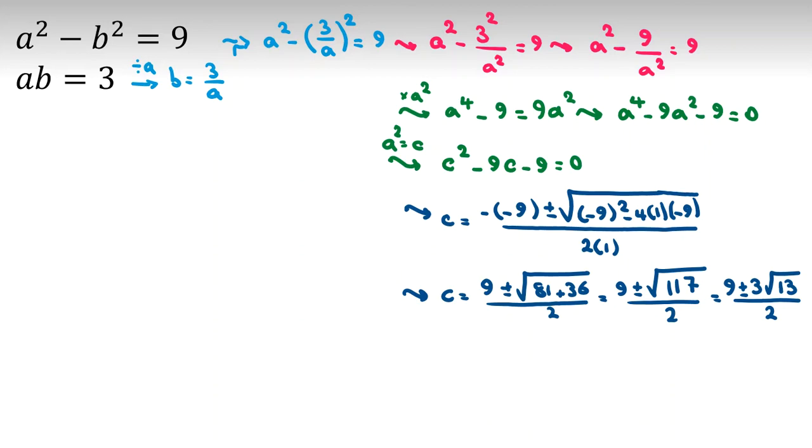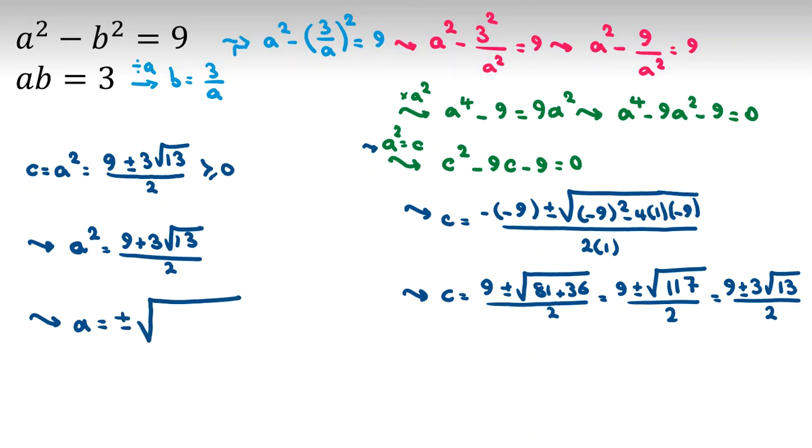And now, we know c is what? But c is a squared. So, c is a squared. And we found c is 9 plus minus 3 root 13 all over 2. Because it is positive for non-negative number. If we select negative, obviously, it will be negative. Because 9 is the square root of 81, but 117 is greater than 81. So, because it is positive, we are working in real numbers. You can say a squared equal to 9 plus 3 root 13 over 2. And then, we can conclude a is plus minus square root of 9 plus 3 root 13 over 2.